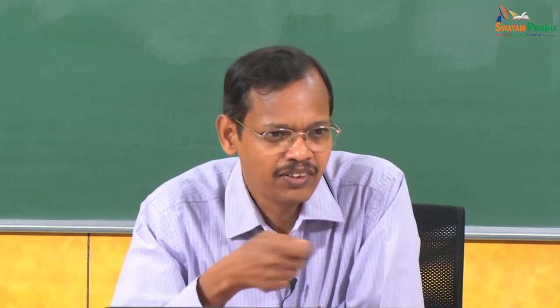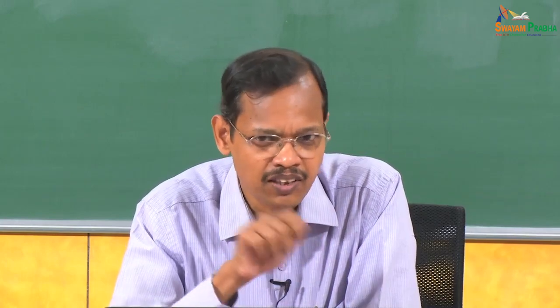This is why, if you look into crystallography structures, they have one structure, whereas NMR structures have several models — you can see NMR structures with 10 models and an average structure among all the different models. In 2002, Kurt Wüthrich got the Nobel Prize for using NMR for 3D structure determination.